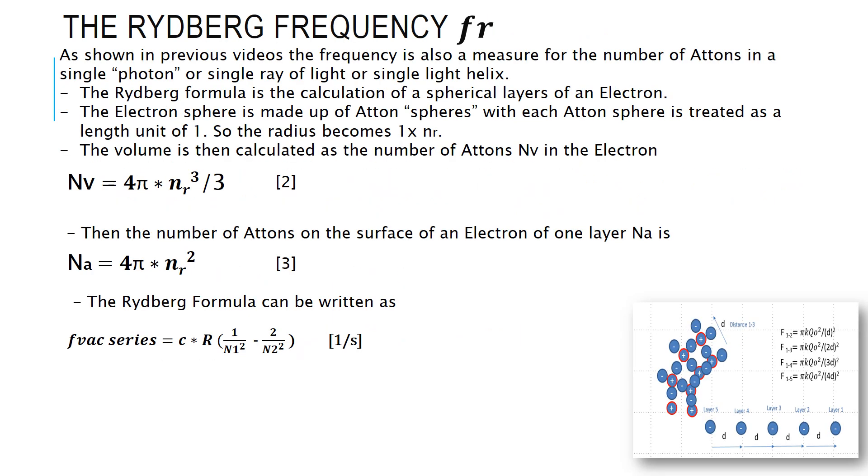Then I have to go back and also understand exactly what's going on and how to calculate the number of atoms in an electron and the number of atoms on the surface of an electron. The simple trick that I use here is that I declare each atom as one unit.